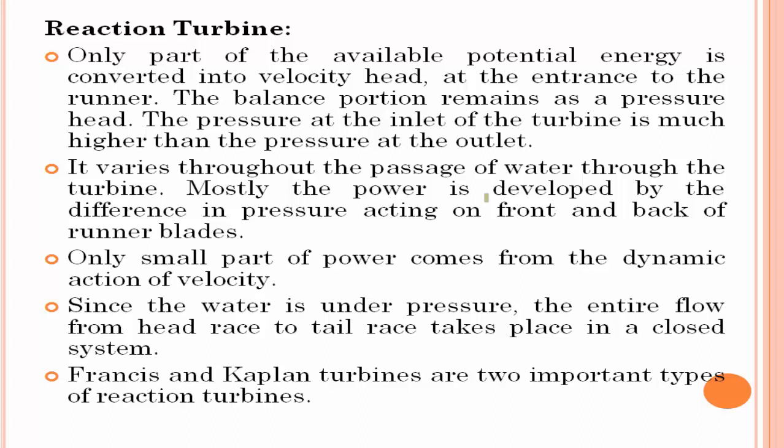The second type of turbine is the reaction turbine. A reaction turbine uses both velocity as well as pressure energy. Only part of the available potential energy is converted into velocity head; the balance portion remains as pressure head. So if a turbine is utilizing both kinetic energy as well as pressure energy, such a turbine is known as a reaction turbine.